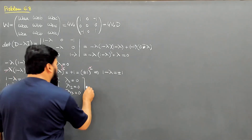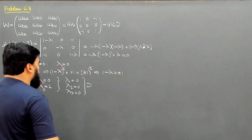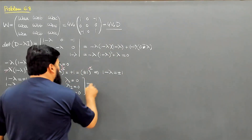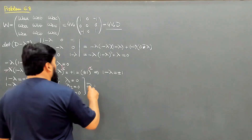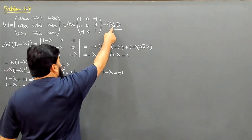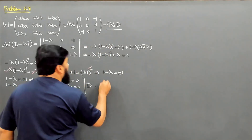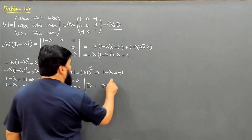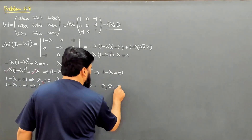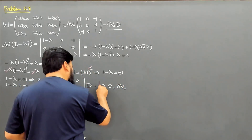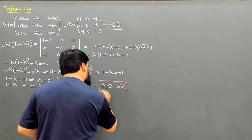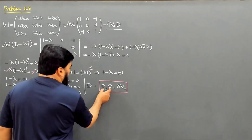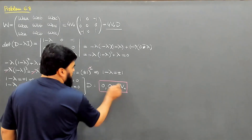So we got three eigenvalues of D: lambda 1 equal to 0, lambda 2 equal to 0, and lambda 3 equal to 2. These are the eigenvalues D1, D2, D3. For the matrix 4V0 times D, the first-order energy corrections are: 4V0 into 0, 4V0 into 0, and 4V0 into 2, which equals 8V0.